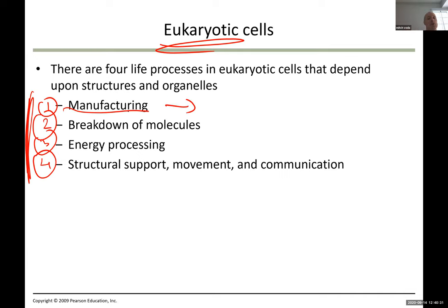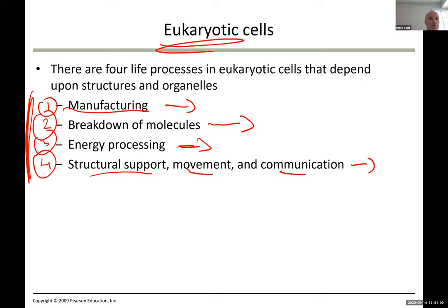Now that we've finished with the chloroplast, let's go back and review the four main cell functions. For manufacture, you should be able to name at least one organelle involved. For breakdown, name an organelle. For energy processing there are two main ones. I did not talk much about structural support, movement, and communication, but I mentioned glycoproteins for communication.